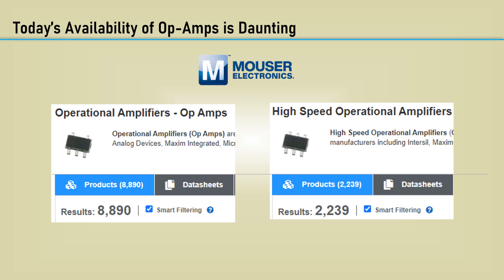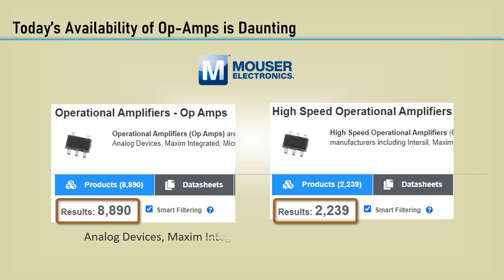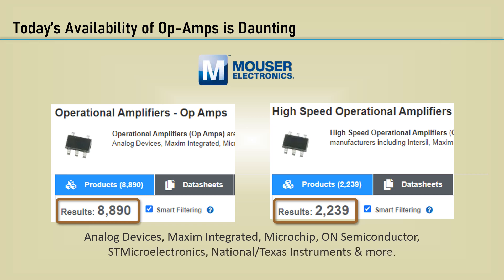Fast forward — the number of op-amps available nowadays is daunting. Mouser's product selector lists 8,890 general purpose op-amps and 2,239 in the high-speed category. There are general op-amp part numbers offered by several companies, so lots of duplicates exist, but that's still a lot of op-amps. Manufacturers include Analog Devices, Maxim, Microchip, ON Semiconductor, ST Microelectronics, National or Texas Instruments, and more. In future videos, we will look at various aspects of the specifications and what to look for in selecting an operational amplifier.